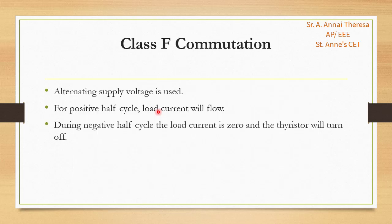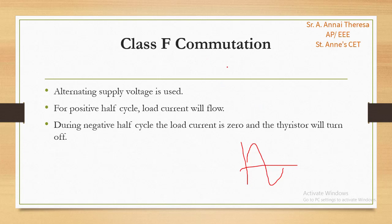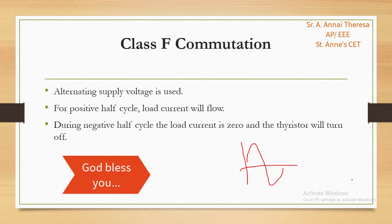The last one is Class F commutation. In Class F thyristor commutation, an alternating voltage — AC supply — is used. During the positive half cycle, load current will flow. If the load is highly inductive, the current will remain until the energy stored in the inductive load is dissipated. During the negative half cycle, the load current becomes zero and then the thyristor will turn off. This is also called AC line commutation. These are the commutation techniques of SCR. Thank you.